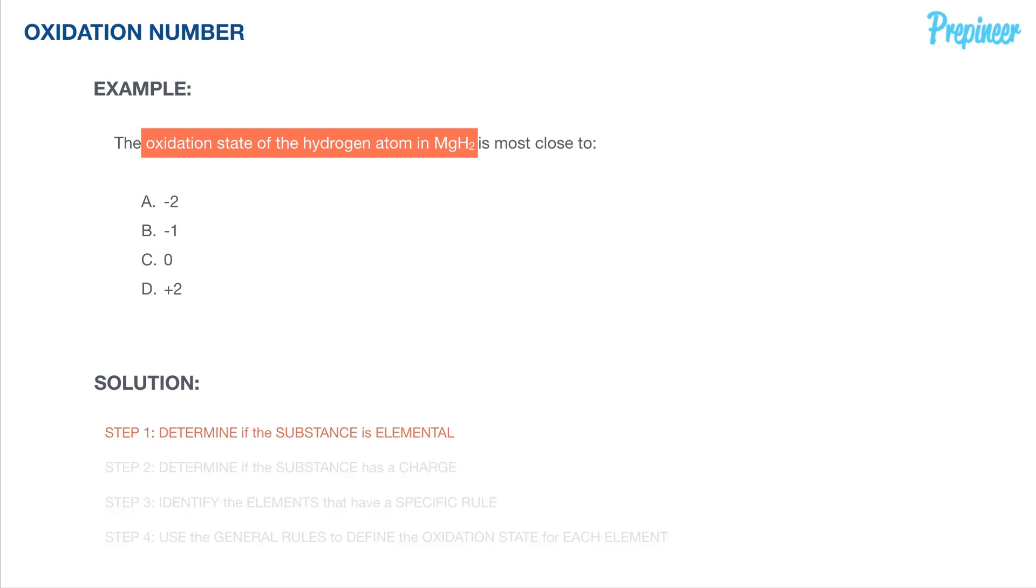So let's go ahead and start with step number one in determining if the substance is elemental. So there's our molecular formula for magnesium hydride. Obviously, it is not elemental. We are dealing with both magnesium and hydrogen in this particular case. So we will move on to step number two, determine if the substance has a charge. We can look at the molecular formula and see that there is no charge present on this particular molecular compound. It is not a polyatomic ion.